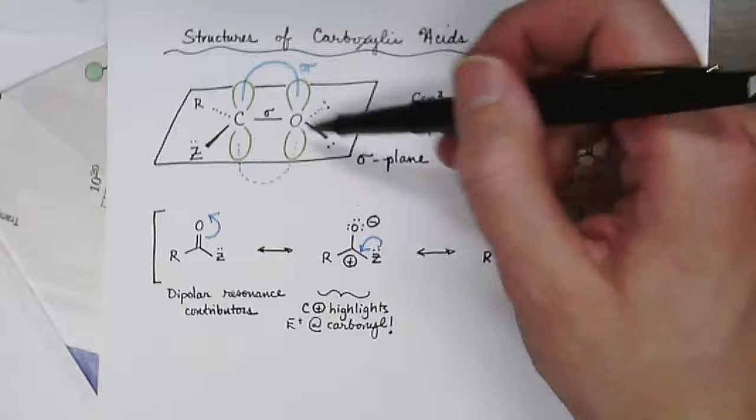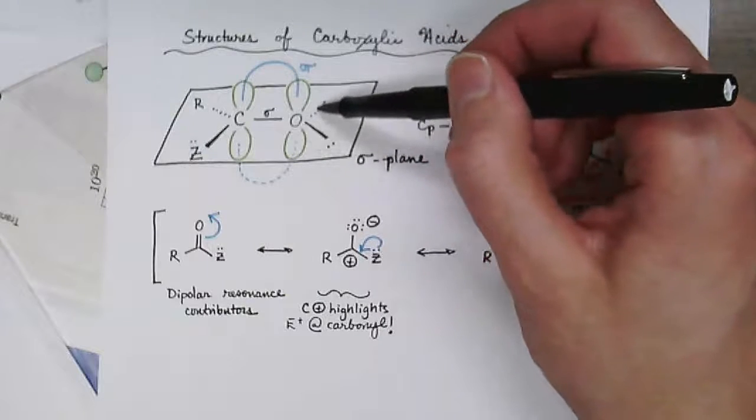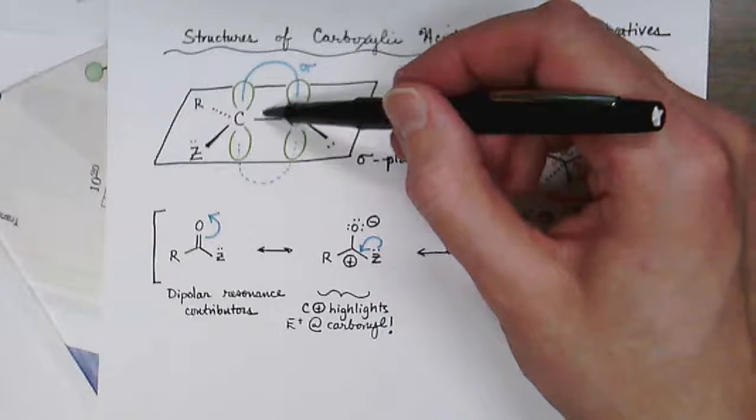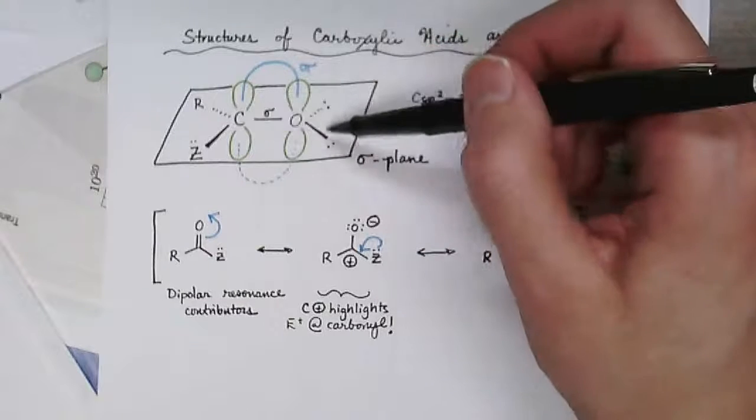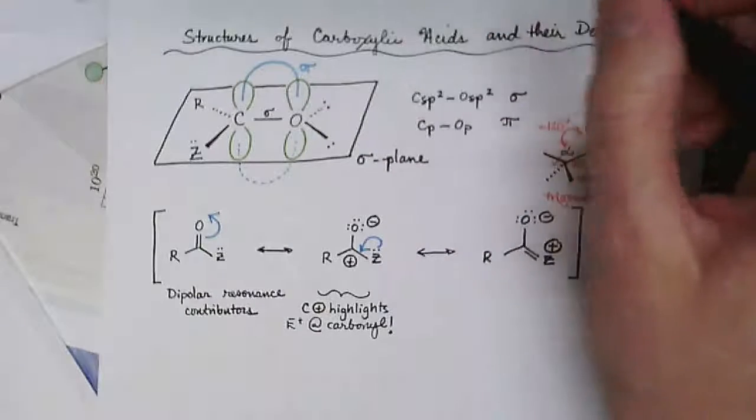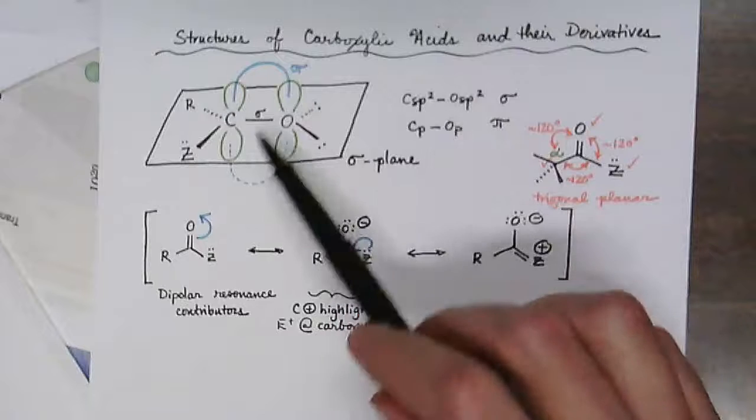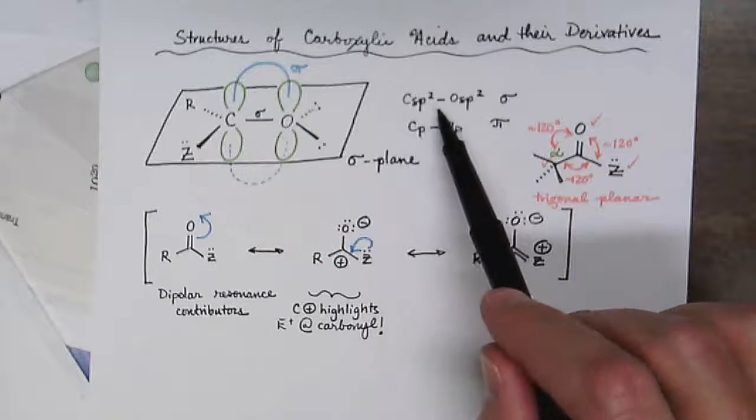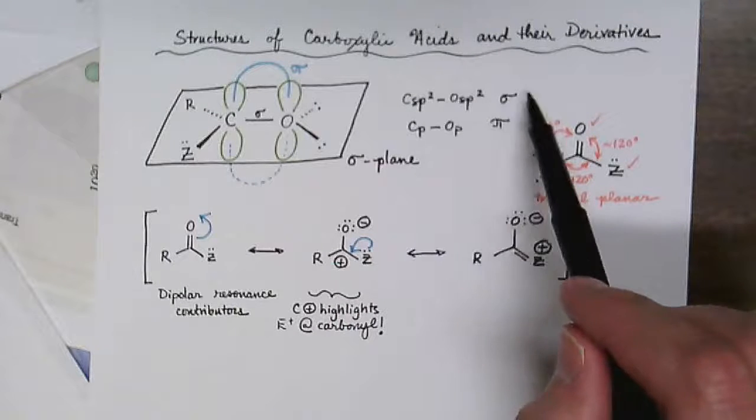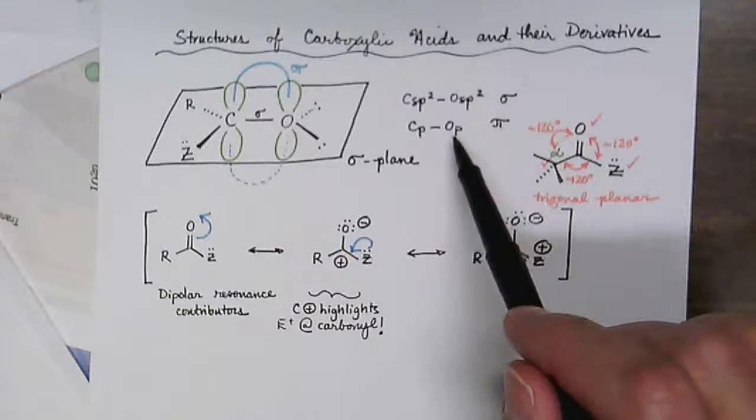For oxygen, the leftover sp2 hybrid orbitals that are not sigma bonded to the carbonyl carbon are those that have lone pairs of electrons. If we examine our molecular orbital description of the carbonyl group, we would say that it's Csp2 to Osp2 sigma, followed by the leftover Cp to Op orbitals that overlap to form our pi bond.